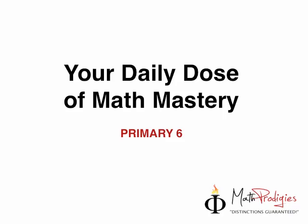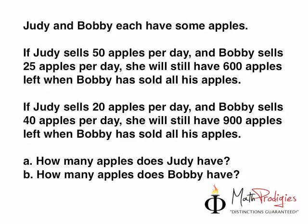Now let's go on to the question I posed yesterday. Judy and Bobby each have some apples. If Judy sells 50 apples per day and Bobby sells 25 apples per day, she will still have 600 apples left when Bobby has sold all his apples. On the other hand, if Judy sells 20 apples per day and Bobby sells 40 apples per day, she will still have 900 apples left when Bobby has sold all his apples. How many apples does Judy have and how many apples does Bobby have?